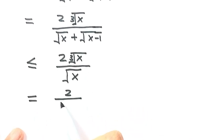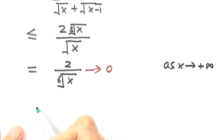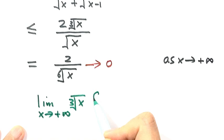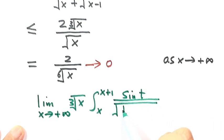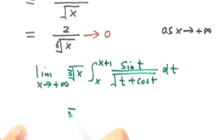Now combining these two together, on top we get the constant 2, and combining the powers of x gives the sixth root of x in the denominator. When x goes to positive infinity, this whole thing approaches zero. So our original question — the limit as x goes to positive infinity of third root of x times the integral from x to x plus 1 of sine t over the square root of t plus cosine t dt — equals zero. Because the absolute value goes to zero, the limit of this function is zero. That is the final answer. Thanks for watching.